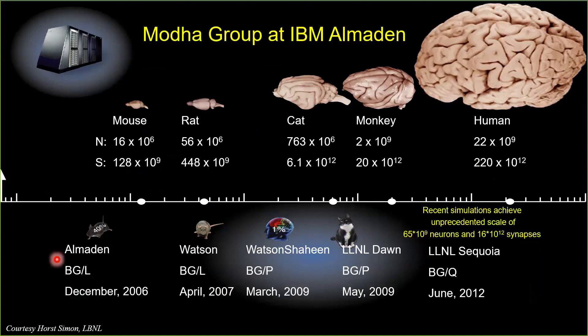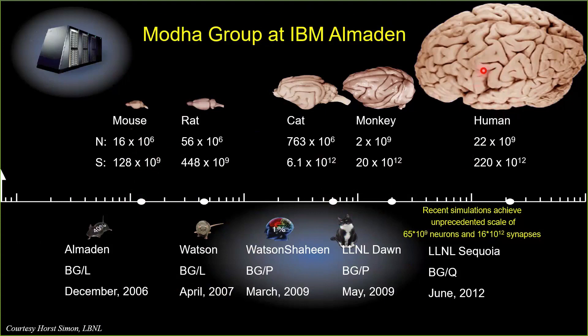I'll give one last example that shows something in a very different direction but equally important on these very large platforms: modeling brains. There are several brain initiatives currently in the United States, Europe, and China, being funded at large scale. This group at IBM — the motive group — is maybe the most well known. They've gone from modeling a mouse brain with 16 million neurons and 128 billion synapses and are gradually working their way toward the human brain, which is 22 billion neurons. This is a problem that requires the very largest machines; modeling the human brain is probably going to require an exascale computer.